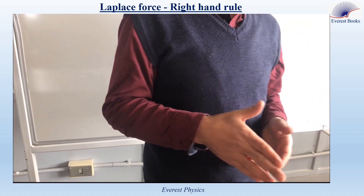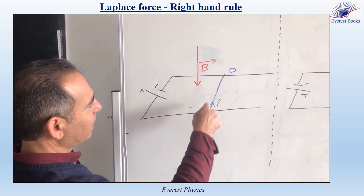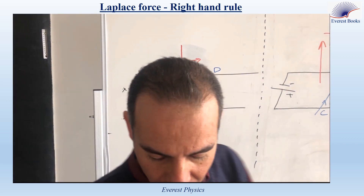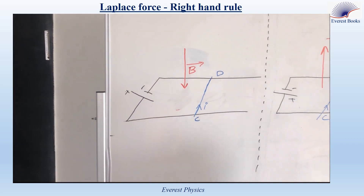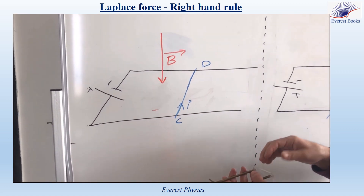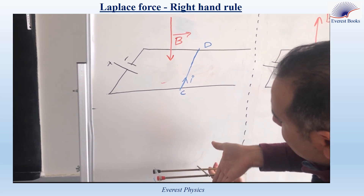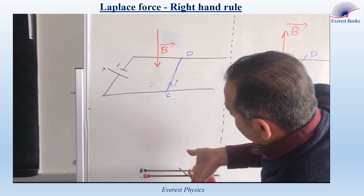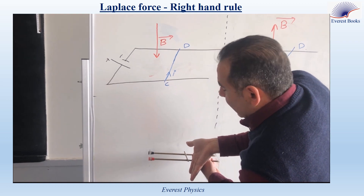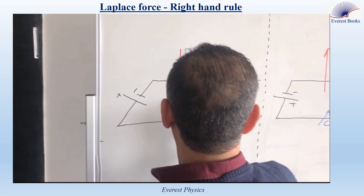Let's take some examples using Laplace rails. In this case, the current in the rod is directed from C to D and the magnetic field is directed vertically downward. The thumb points in the sense of the current, which is inward, and the other fingers are directed vertically downward for the magnetic field. As you can see, the palm of my right hand faces the left side, so the direction of the Laplace force is to the left.